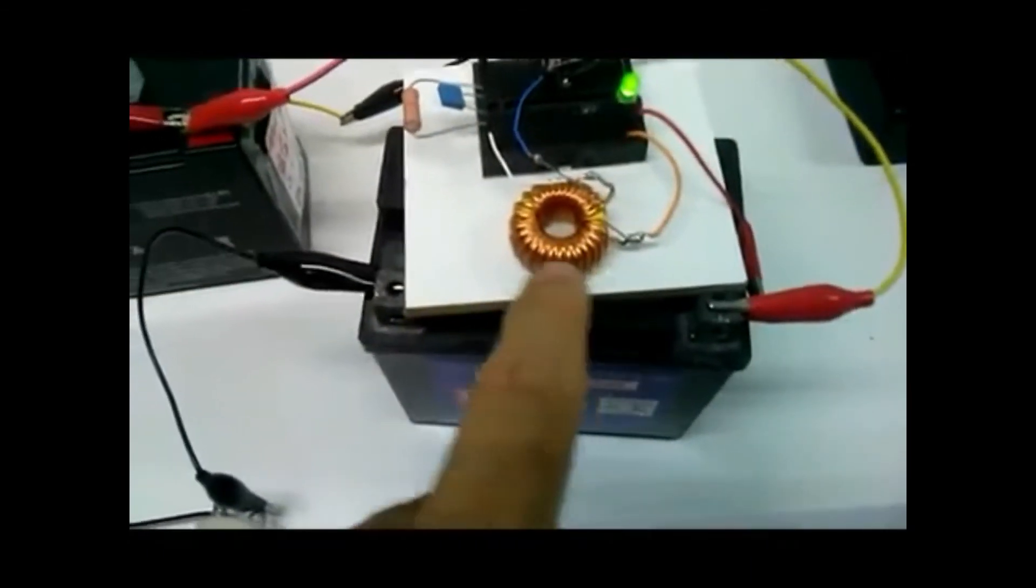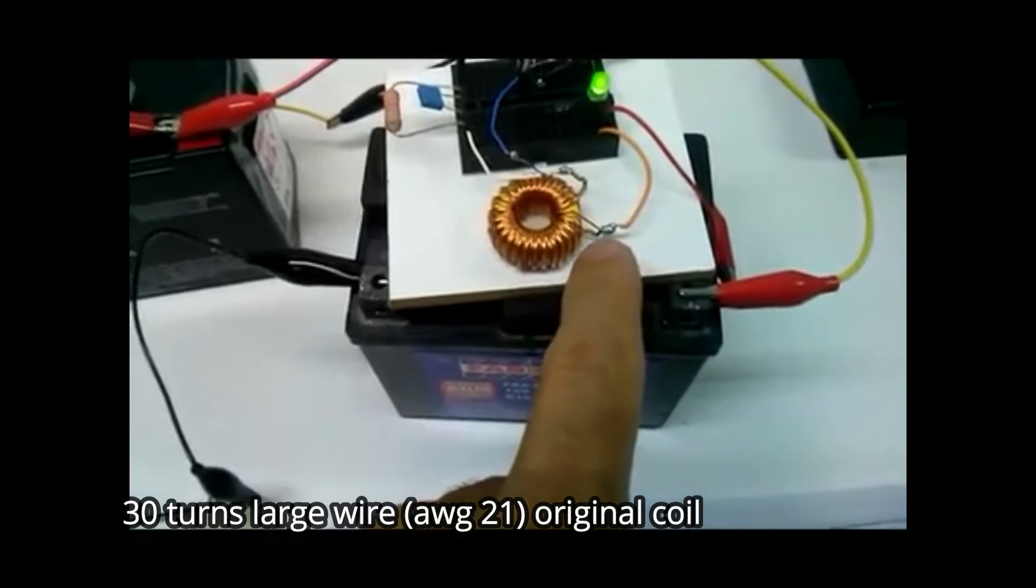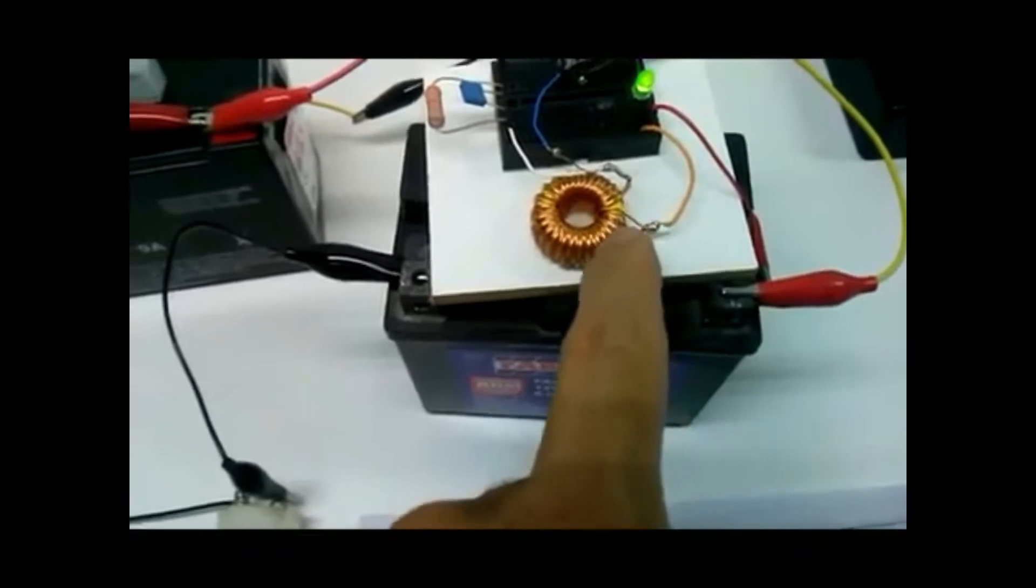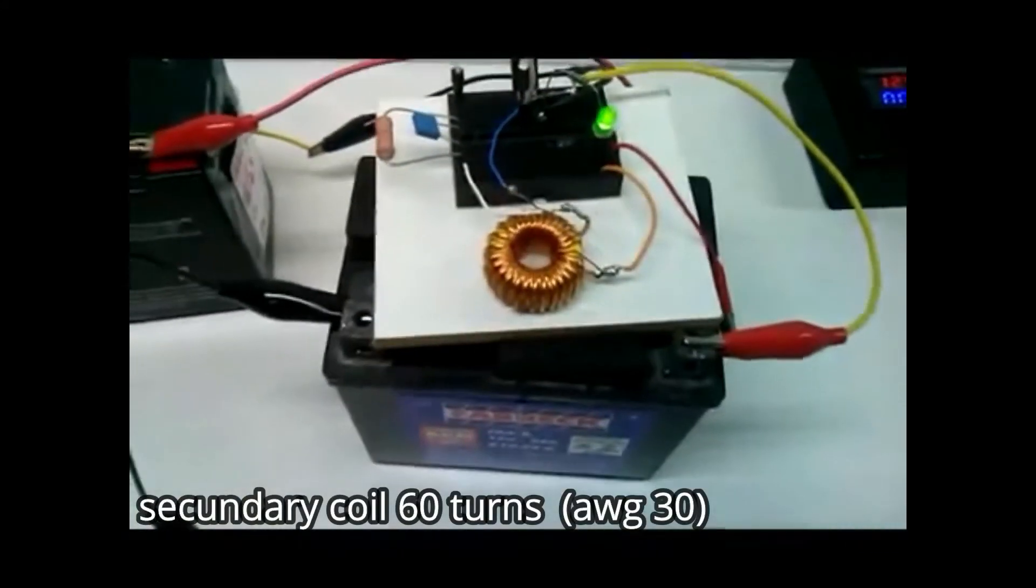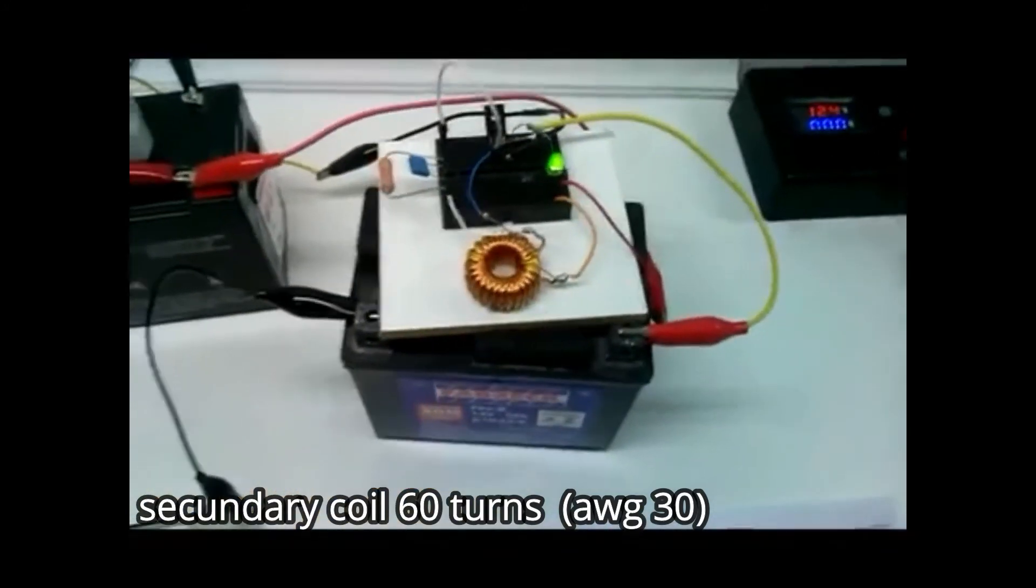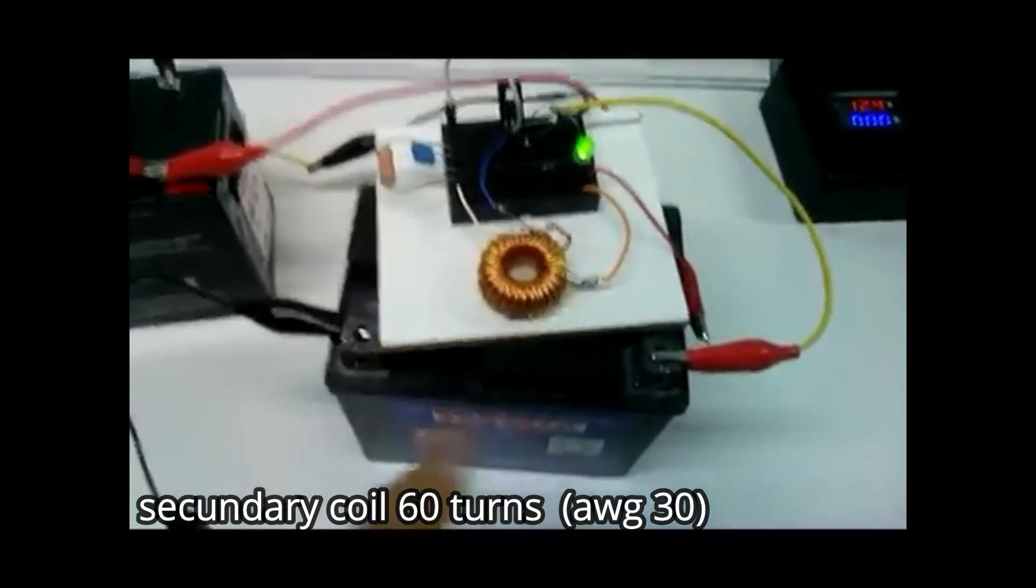This toroid had one coil with 30 turns of large wire, and so I wound up a secondary coil with thin wire, with twice the number of turns than the primary coil, 60 turns of thin wire, maybe 30 AWG.